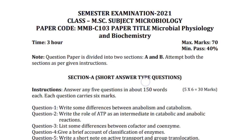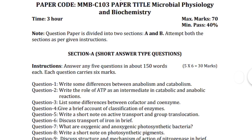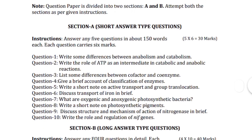This question paper is divided into two sections: Section A and Section B. Section A is of short answer type questions and Section B is of long answer type questions. Section A contains 10 questions and you have to attempt only 5 questions. Each question carries 6 marks.